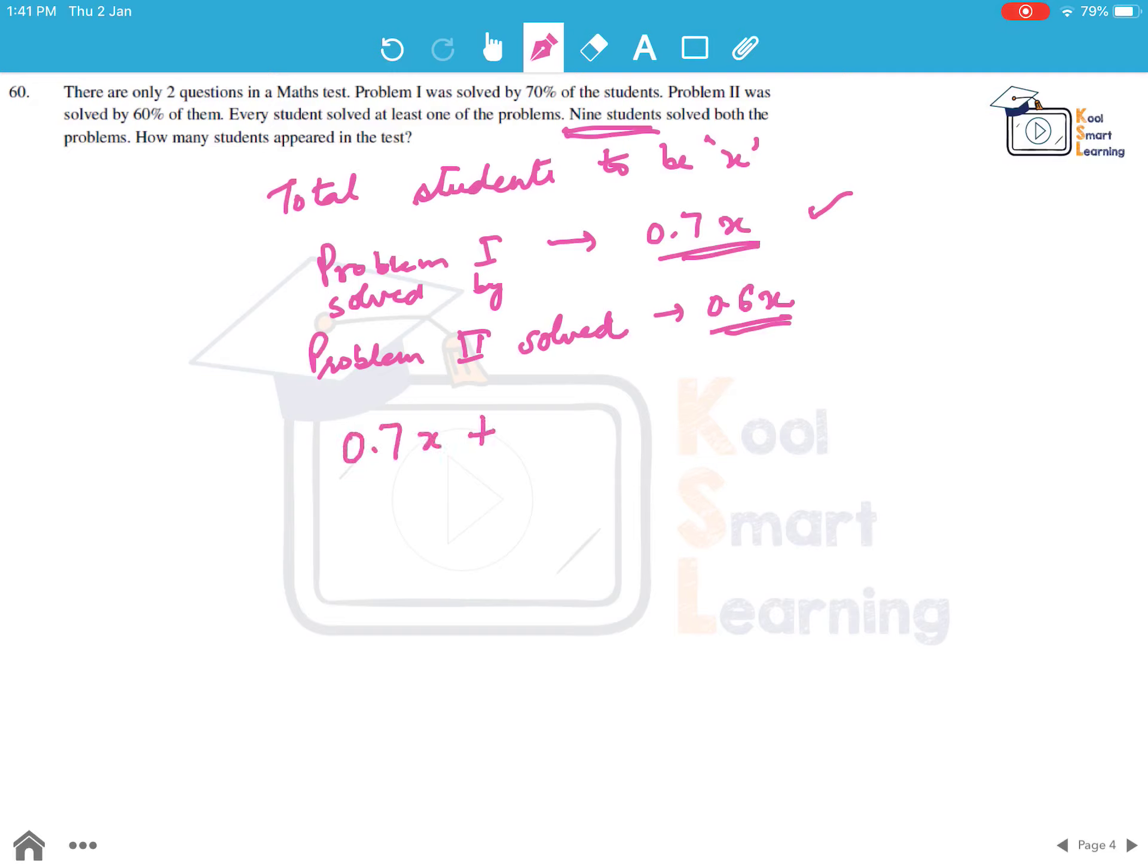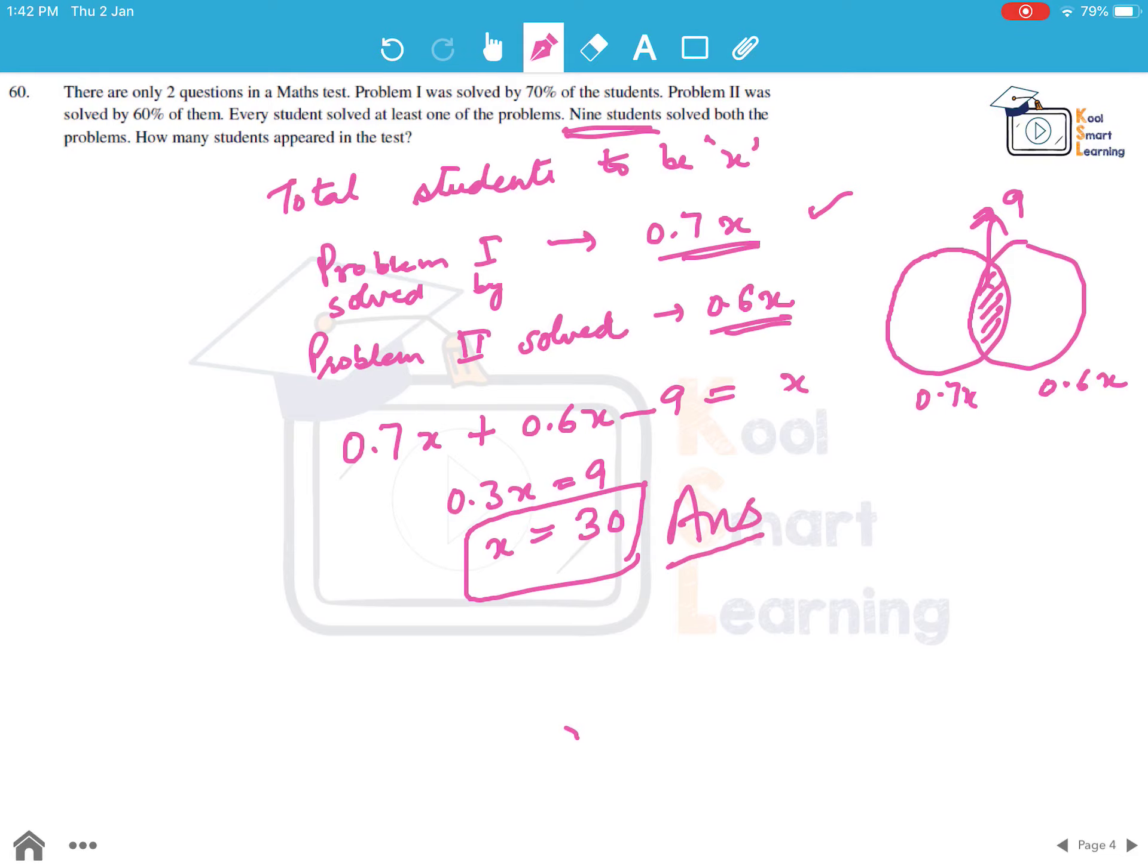So we can say, if we subtract 9 from this, we get a total of X. We can express it in Venn diagrams also. If this is 0.7X and this circle is 0.6X, then this number is 9, which is adding up twice. So we will subtract it once and we get the total number of students as X. So this gives us 0.3X is equal to 9. So X comes out to be 30. So the total number of students who appeared for the test are 30.